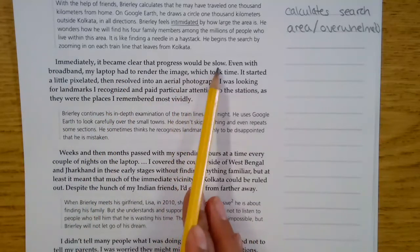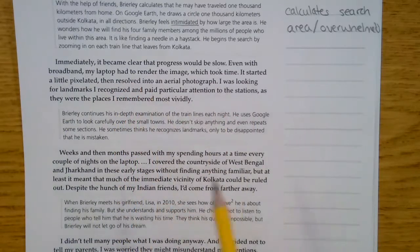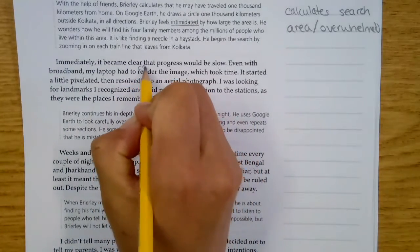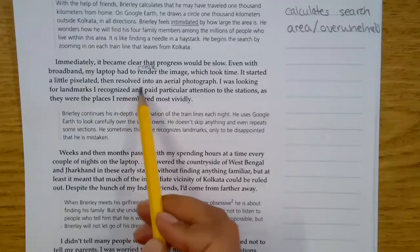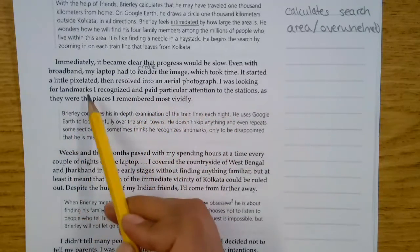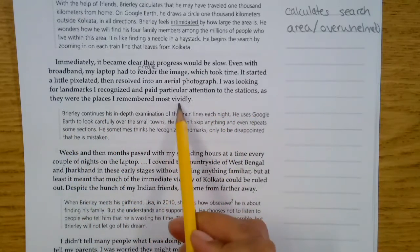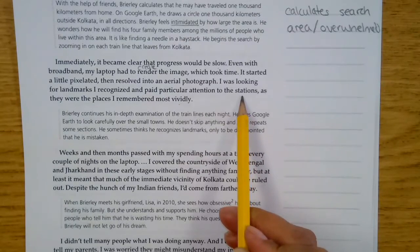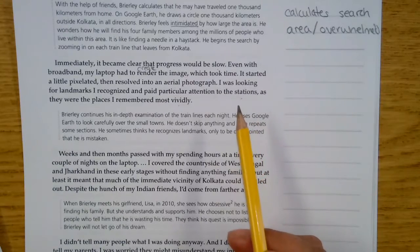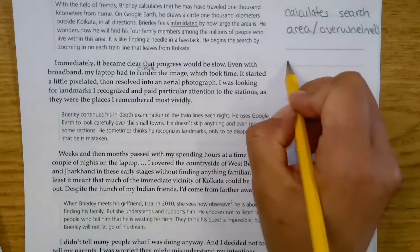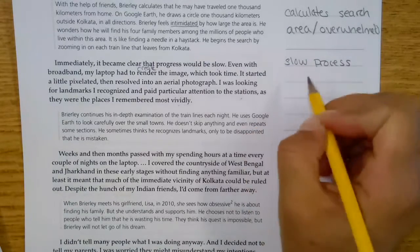Immediately, it became clear that the progress would be slow. Even with broadband, that's like the internet, my laptop had to render or create the image, which took time. It started a little pixelated, then resolved into an aerial photograph. I was looking for landmarks I recognized and paid particular attention to the stations, as they were the places I remembered most vividly. So he's paying most attention to the train stations because those places are the memories that kind of stuck with him when he was five years old. So we're seeing that this is a slow process and he's looking for things he remembers.